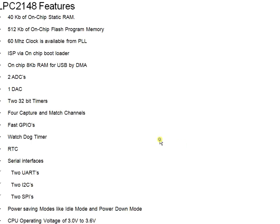Coming to the features of the LPC 2148 controller: it contains 40 KB of on-chip static RAM and 500 KB of on-chip ROM. The processor frequency available in the LPC 2148 controller is 60 MHz, which comes directly from the ARM7 processor.